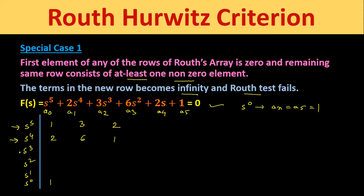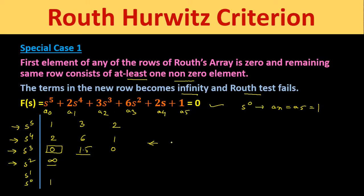Now we construct the third row (s³) using the first and second rows. The first element equals (2×3 − 6) / 2 = 0, and the second element equals (2×2 − 1×3) / 2 = 1.5. When we try to find the first element of the s² row using this zero, we get infinity. So the first element of the s³ row is 0 with a non-zero element 1.5 remaining — the Routh test fails here.